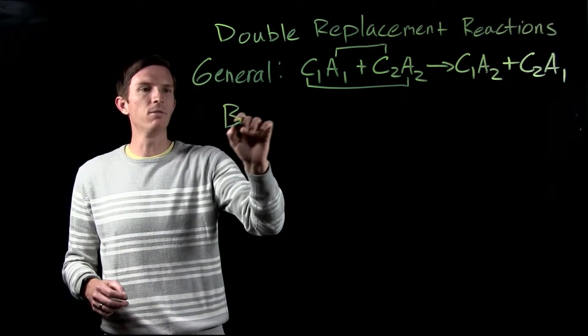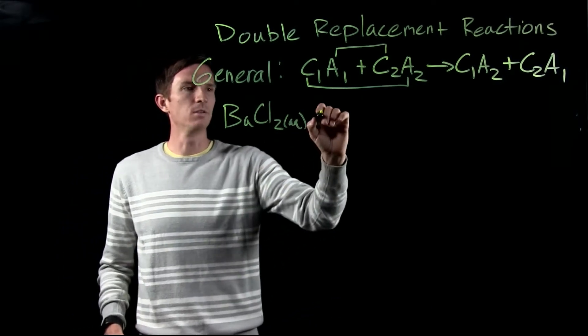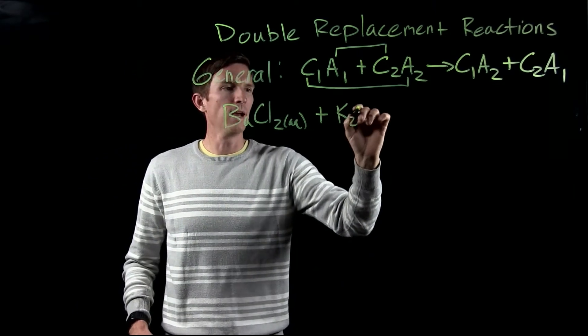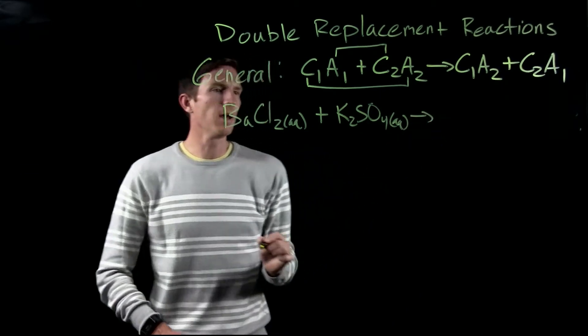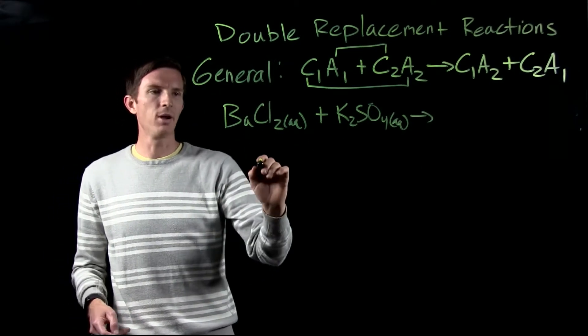So let's say we have barium chloride, which is aqueous, it would be dissolved in water, and that's going to react with potassium sulfate. And now we have just been given these two reactants. Let's go ahead and predict the products.